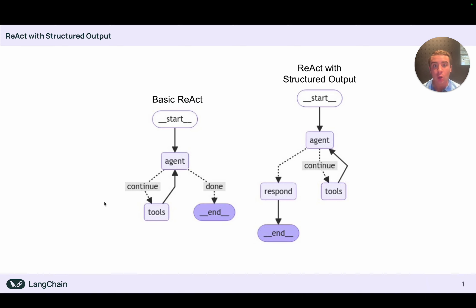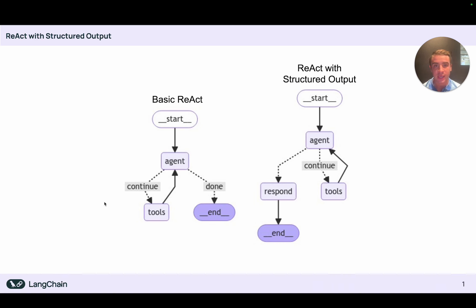If we want to structure our output, what we can do is add a respond node right before the LLM responds to the user. That respond node is going to take the output of that LLM and format it into the structured format that we wish to respond to our user with. It can be really helpful to respond in structured formats because this increases the reliability of our agent — we have the same exact expected output every time, making it more deterministic and usable in larger software systems.